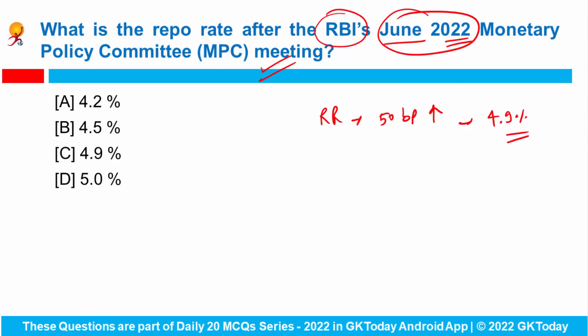MPC members have unanimously voted for this. So the correct answer for the repo rate is 4.9%.